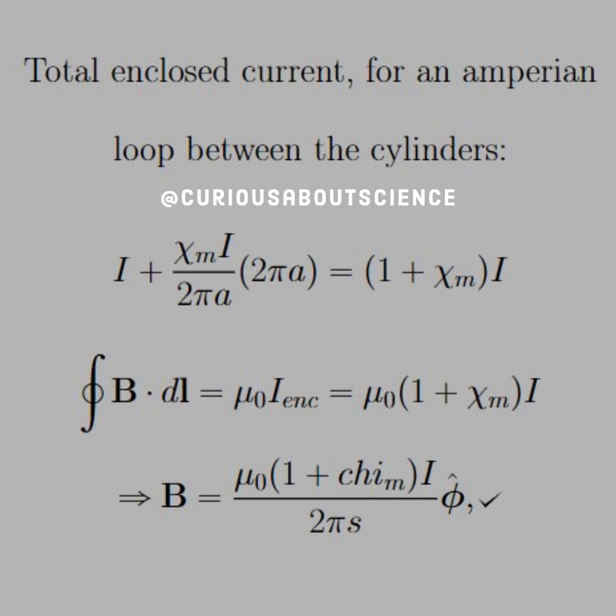Therefore, the total enclosed current for an Amperian loop between the cylinders will yield I plus chi M I over 2 pi A times the surface circumference, which is 2 pi A. Go figure. So we're left with (1 plus chi M) times I as the 2 pi A's cancel.